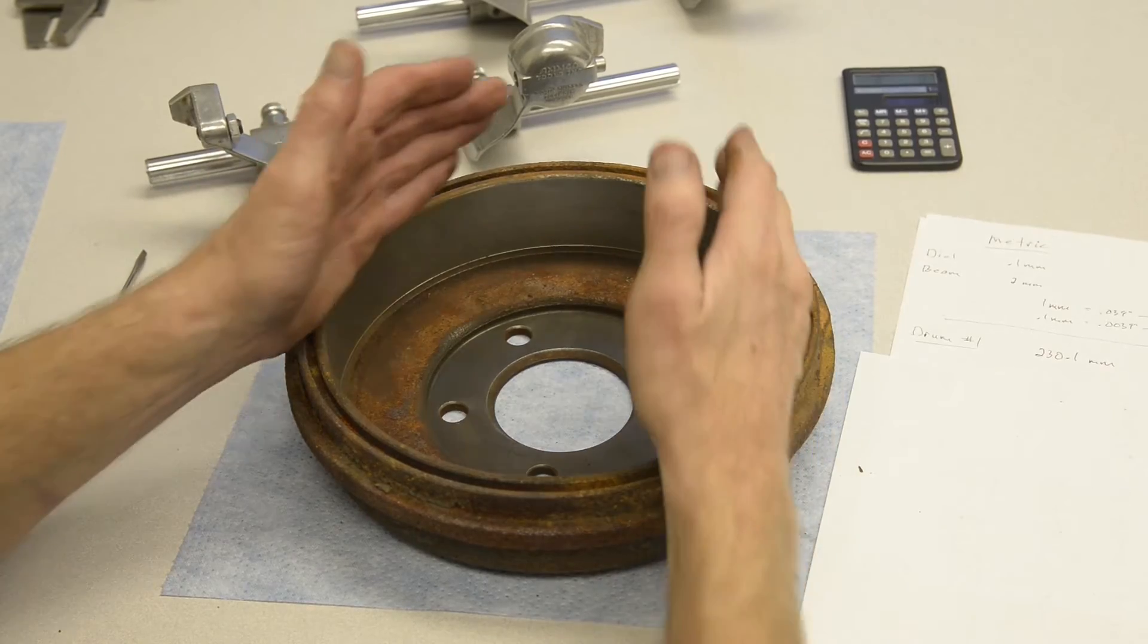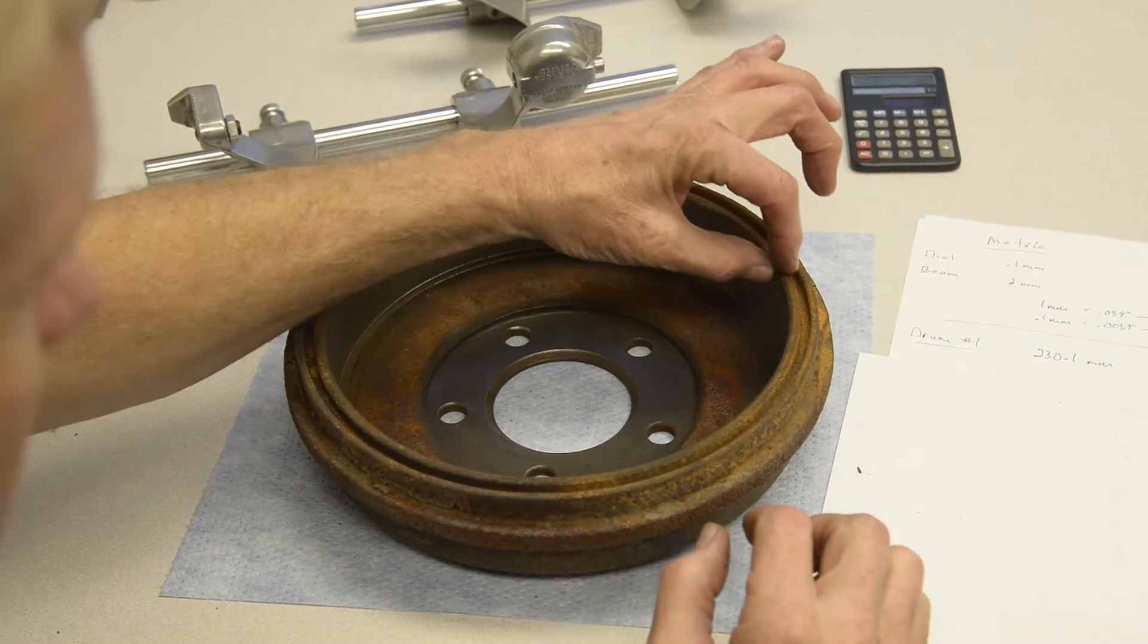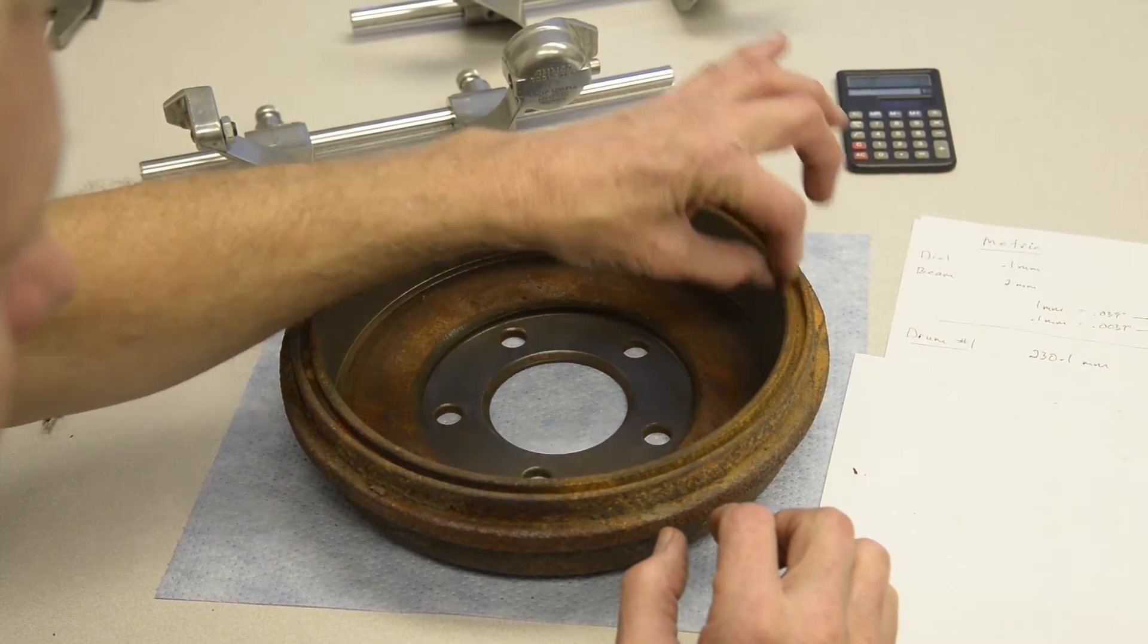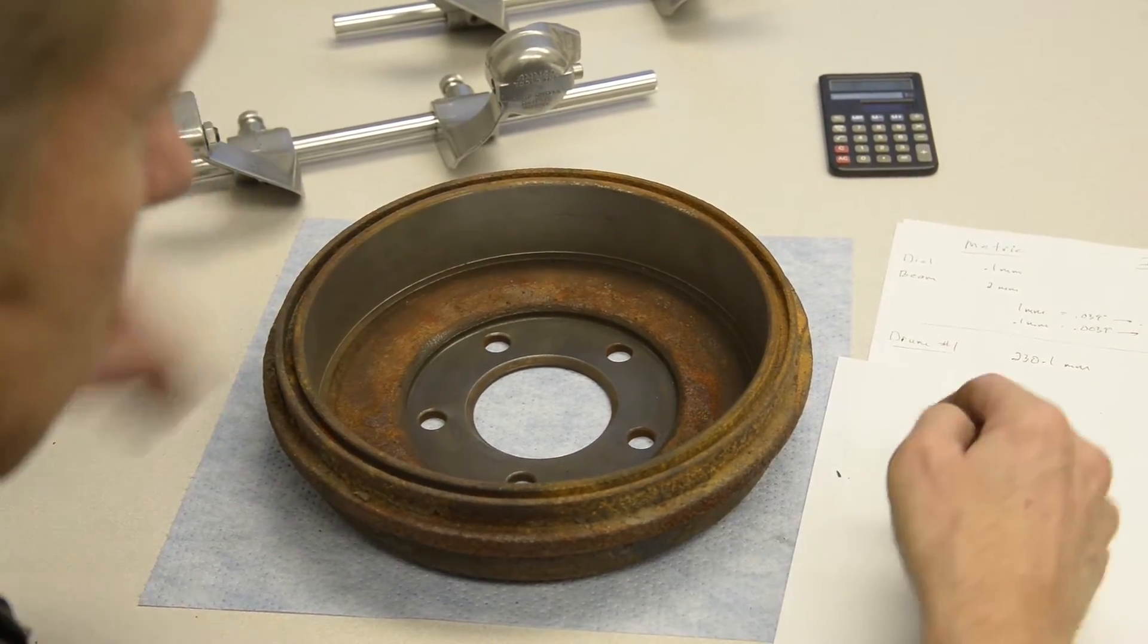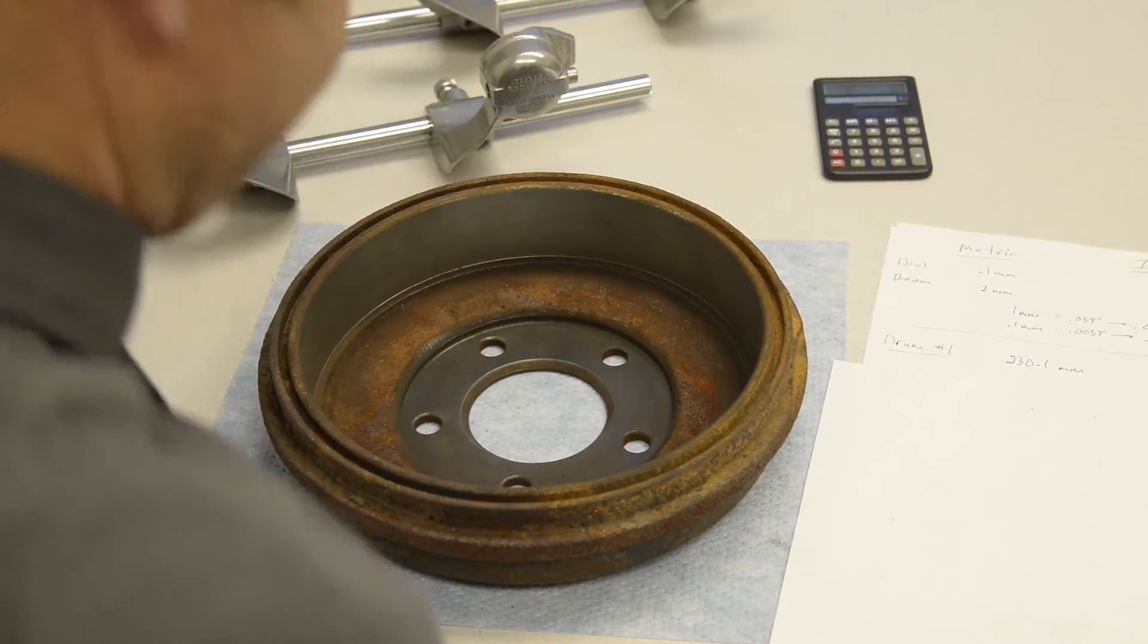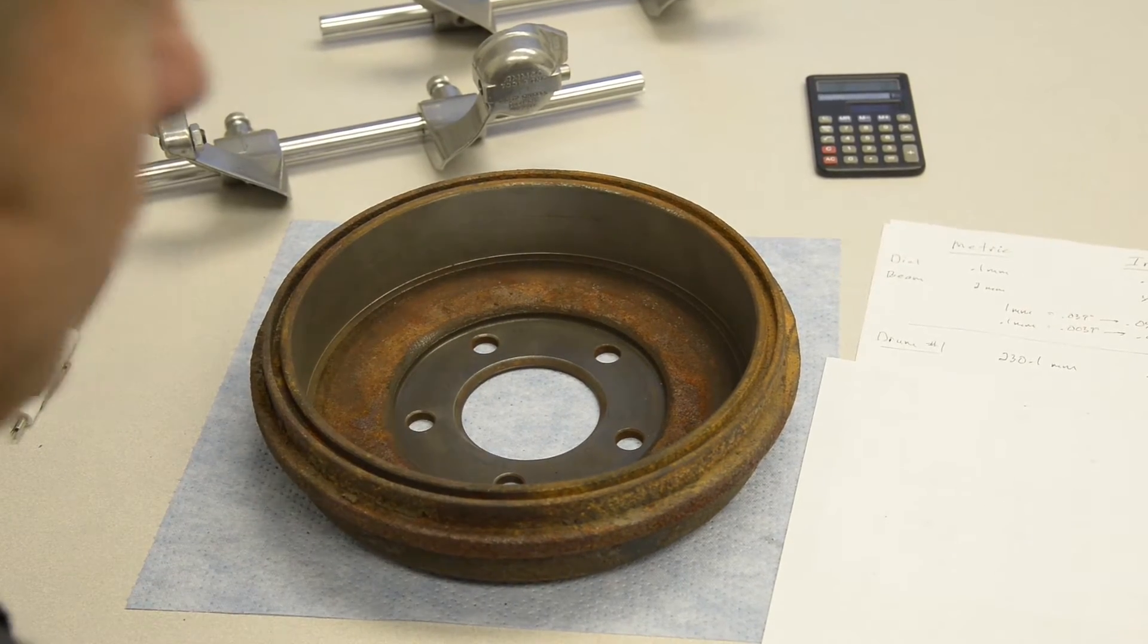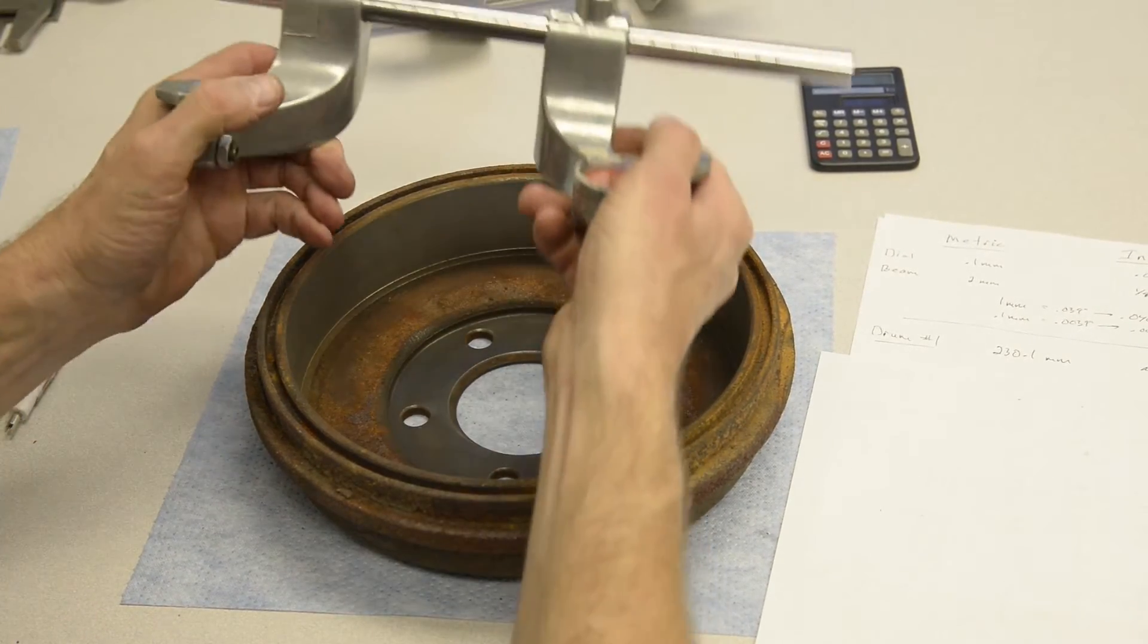And if it gets out that far, that means this area here, this band, is probably getting too thin and will have a tendency to warp, and that leads to drum warp and maybe less effective braking.